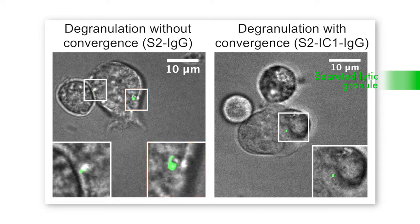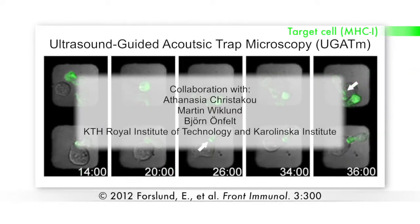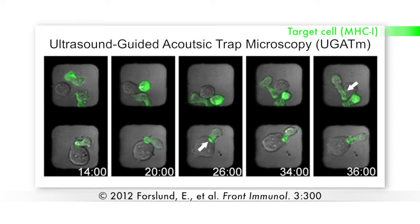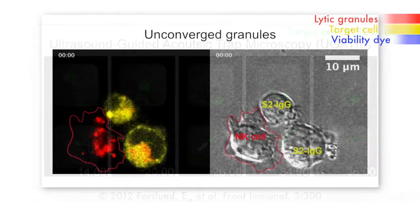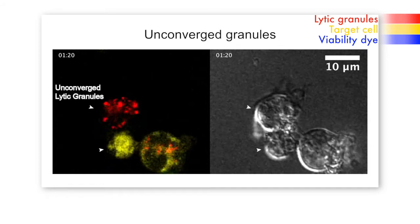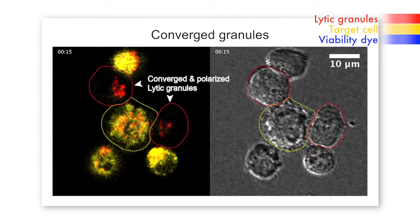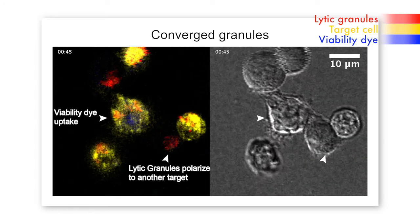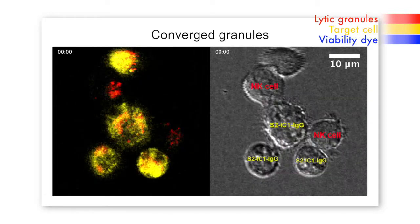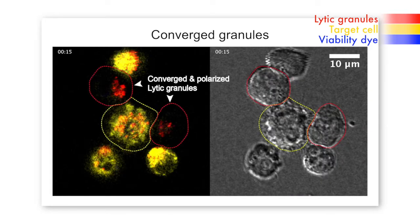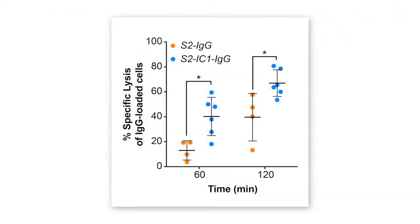To investigate the consequences of this on cytotoxicity, Orange and colleagues collaborated with a team of Swedish researchers on a technique called ultrasound-guided acoustic trap microscopy, which can control the formation of specific NK cell–target cell conjugates. They could have target cells that promoted degranulation without convergence, or cells that promoted degranulation with convergence. What they saw is that the convergence signal allowed for greater efficiency of cytotoxicity against the triggering cell — by having all of the granules in one place, you're more likely to kill the cell that's promoting the stimulus in the first place.